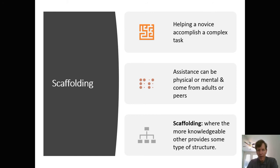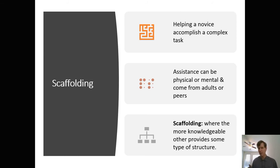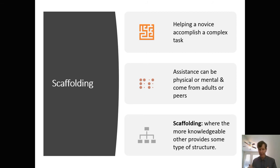You want to help students accomplish a complex task with assistance when you're scaffolding student learning. This assistance can be physical — a physical tool like a ruler or calculator as a form of scaffold for children when talking about math skills. It can be mental, or can come from adults and peers. Scaffolding in a nutshell is where the more knowledgeable other — such as a teacher or peer — provides a type of structured support.